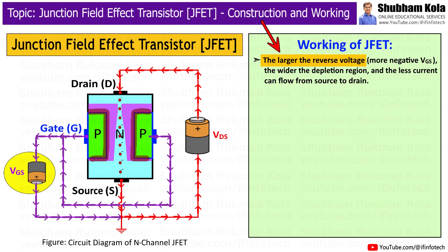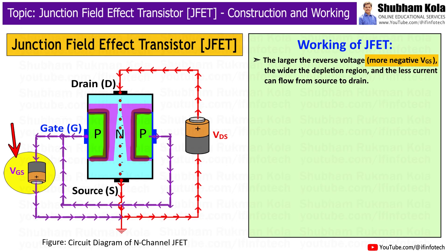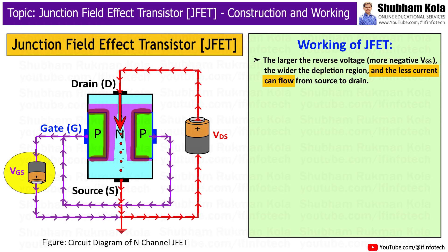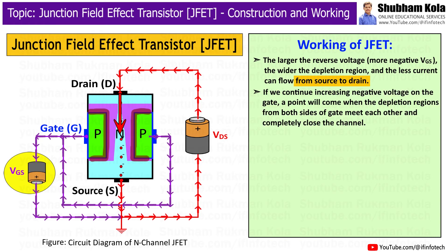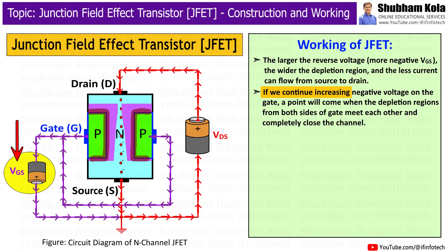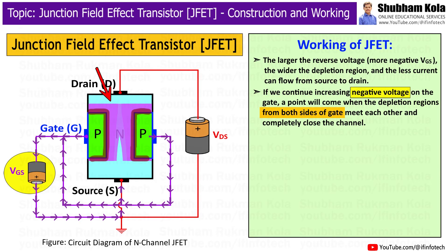The larger the reverse voltage, i.e. the more negative Vgs, the wider the depletion region, and the less current can flow between source and drain. If we continue increasing the negative voltage on the gate, a point will come when the depletion regions from both sides of the gate meet each other and completely close the channel.